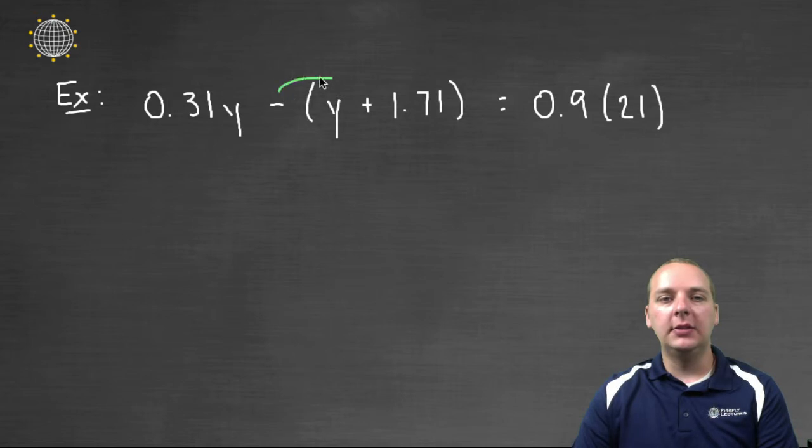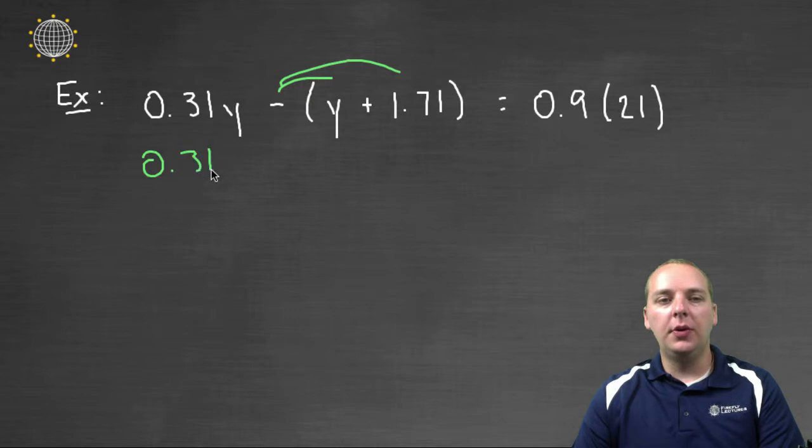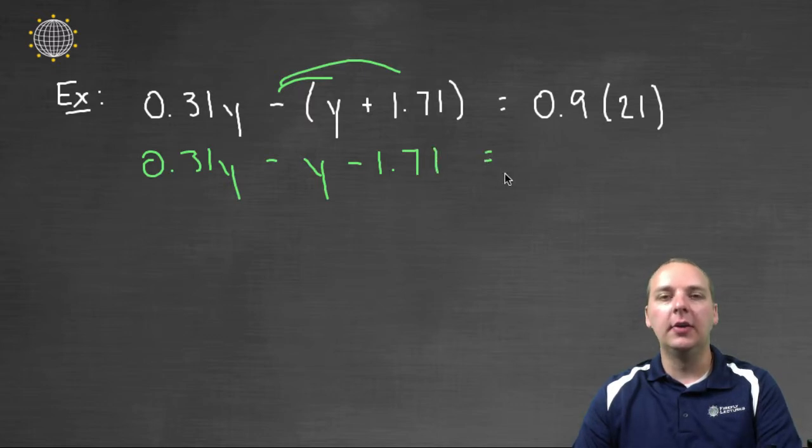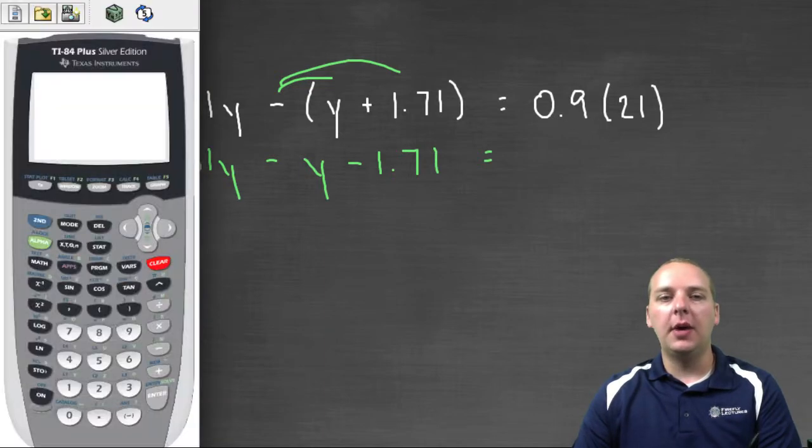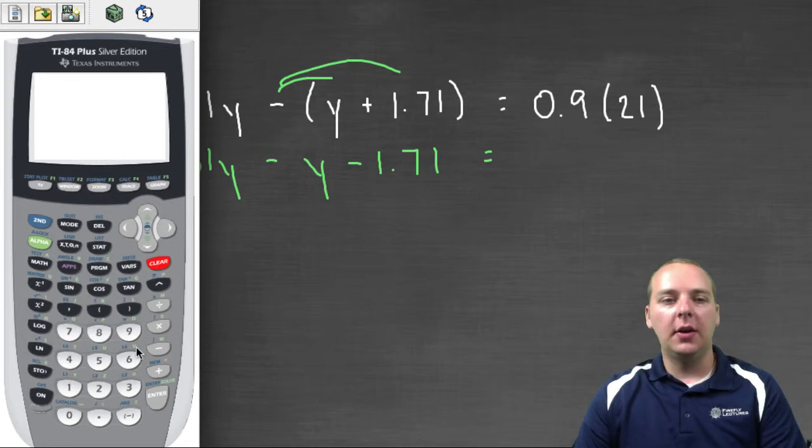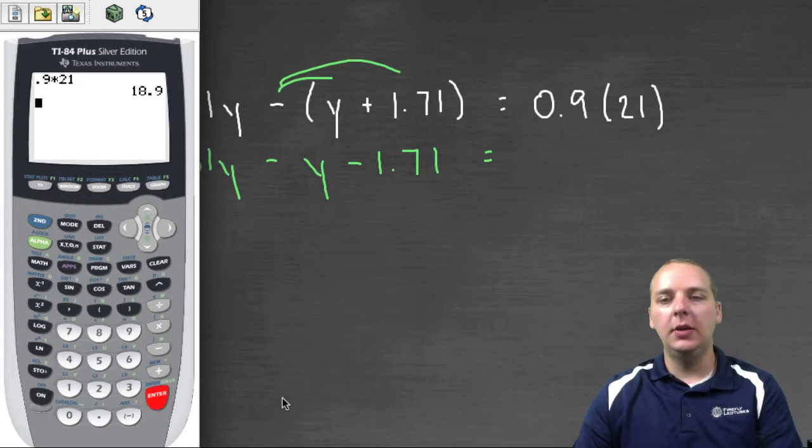One thing I see is that we'll probably have to distribute this negative. So we'll have 0.31y - y - 1.71, because you're distributing the negative. Then on the right hand side, we'd have 0.9 times 21. If you don't feel comfortable doing that by hand, then we'll just take our calculator here and do 0.9 times 21, and we'll get 18.9.